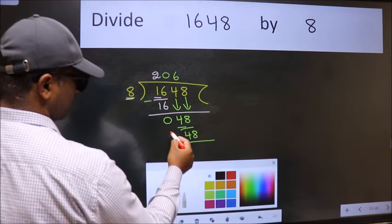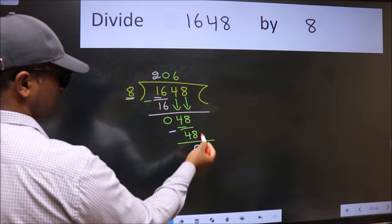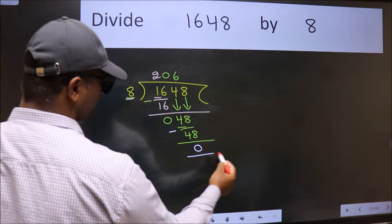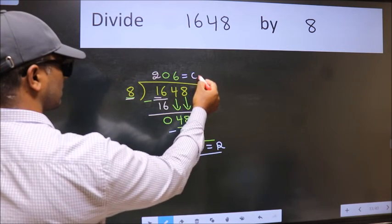Now we subtract. We get 0. No more numbers to bring down. So we stop here. This is our remainder and this is our quotient.